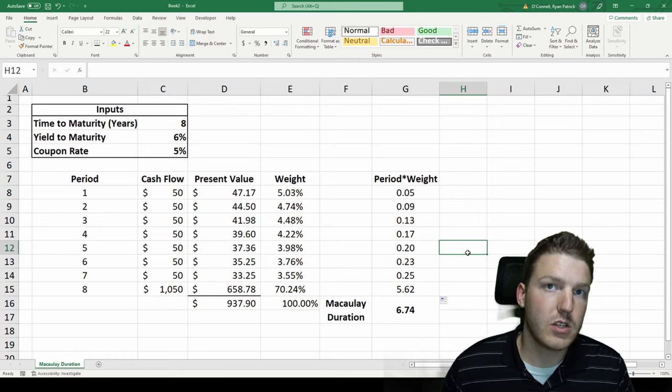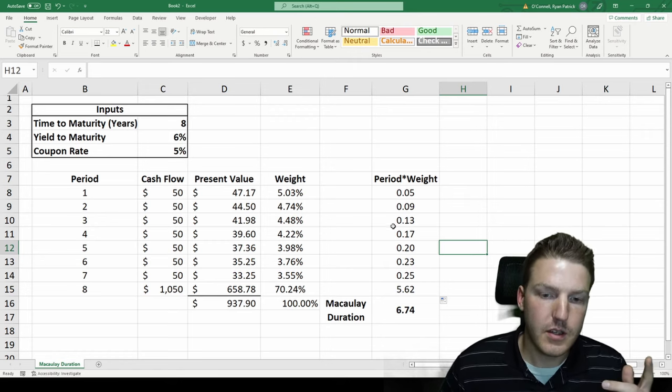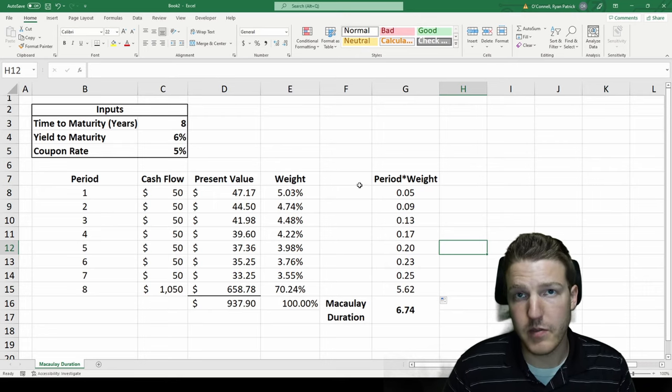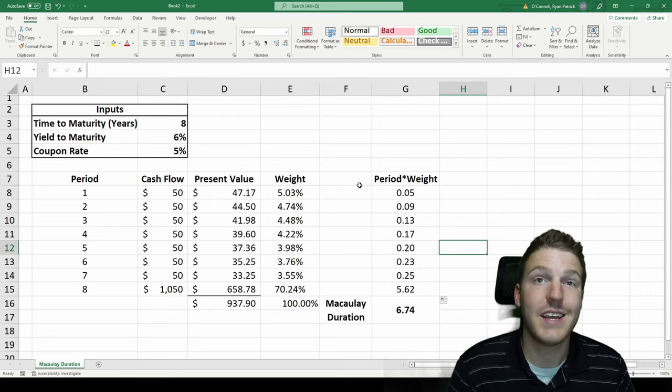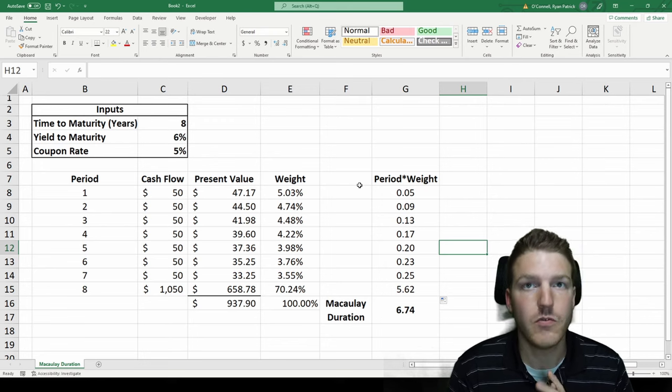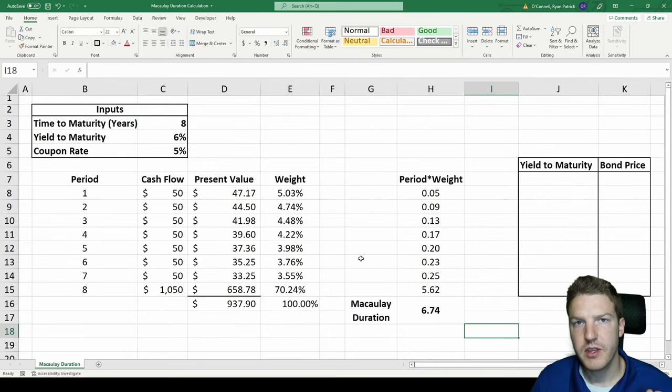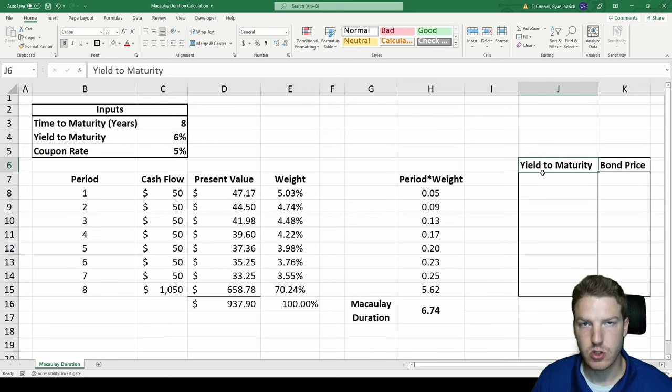which means that when market interest rates go up 1%, the price of the bond or value of the bond should fall by 6.74%. An important thing to note about bond duration is that it assumes a linear relationship between the yield to maturity and the bond price change.